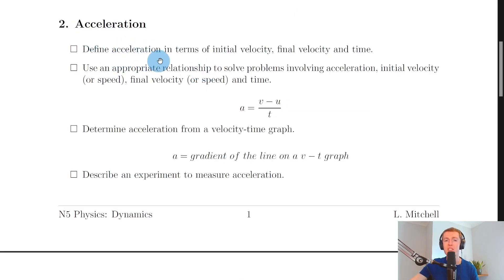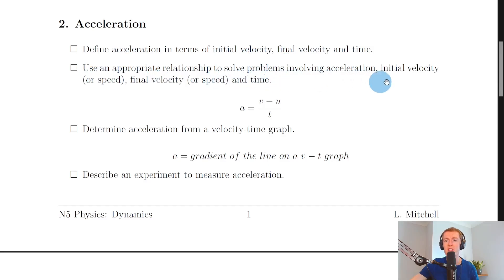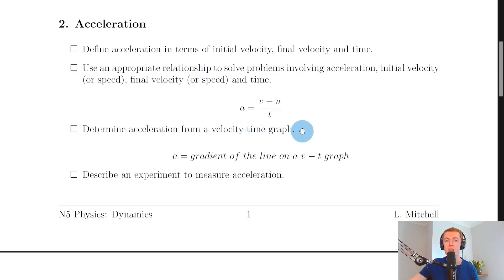Moving on to section two: define acceleration in terms of initial velocity, final velocity and time. Acceleration is defined as the change in velocity per unit time — that's the final velocity minus the initial velocity. The equation is a = (v − u) / t, where a is acceleration, v is final velocity or speed, u is initial velocity or speed, and t is time. You also need to determine acceleration from a velocity time graph — acceleration equals the gradient of the line on that graph.